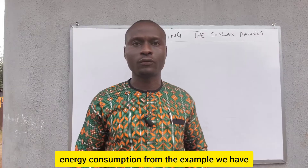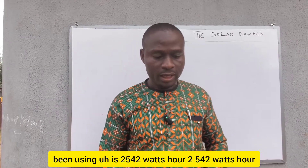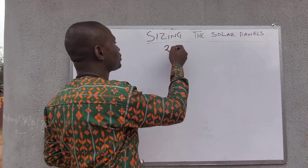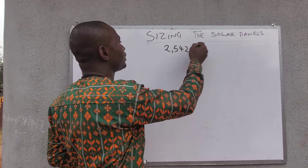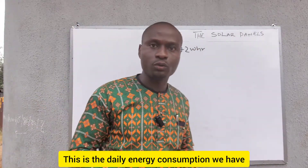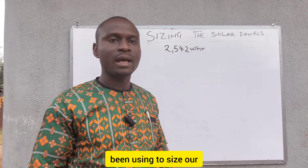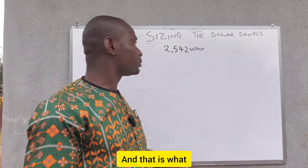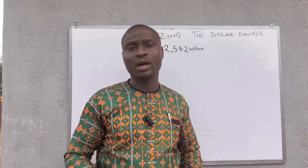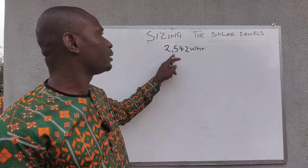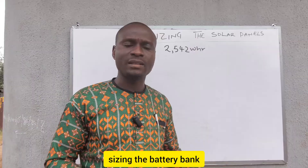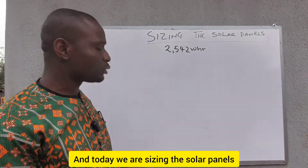Our daily energy consumption from the example we have been using is 2,542 Watt-hours. This is the daily energy consumption we used to size the battery bank, and this is what we'll use to size the solar panels. You can watch my previous videos on how we got this value. We have the load analysis table, sizing the battery bank, and today we are sizing the solar panels.